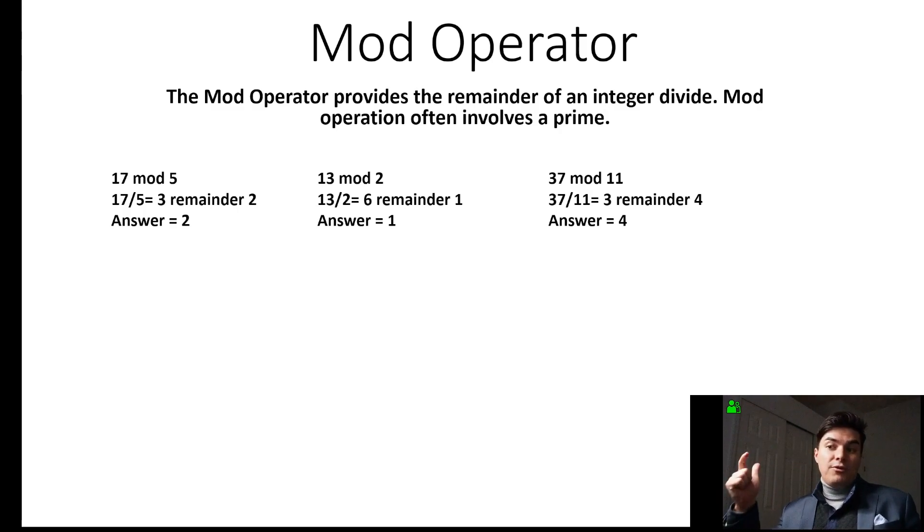13 mod 2. 2, 4, 6, 8, 10, 12. 13 minus 12 is 1, because the remainder is 1.